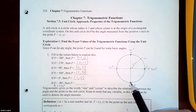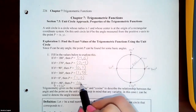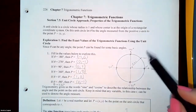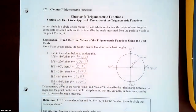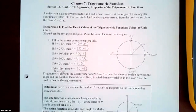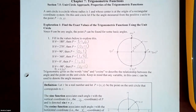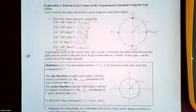We already know the coordinates at 270 degrees: (0, −1). The sign of the angle makes a difference on whether you're going upward or downward. Trigonometry uses the words sine and cosine to describe the relationship between the angle and the points on the unit circle. Keep in mind that any variable — in this case t — can be used to denote the angle measured, so instead of theta you can use the letter t.